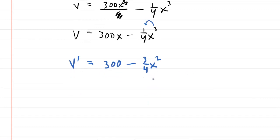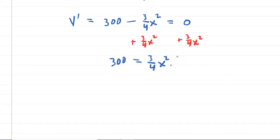So to maximize the volume, we would set the derivative equal to 0. This is going to allow us to find the so-called critical numbers. So we'll add 3 fourths X squared to both sides here. So now we will have 300 is equal to 3 fourths X squared. We could then multiply both sides of this equation by four thirds, which is the reciprocal of three fourths.